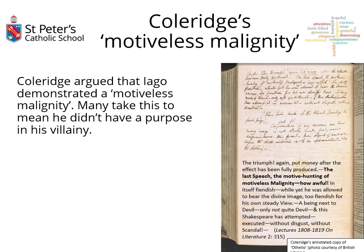The phrase 'motiveless malignity' was coined by Samuel Taylor Coleridge, a romantic poet who, in his own annotations of his text, argued that Iago demonstrated a motiveless malignity. A malignity is something evil — we talk about cancer being malign. So this idea of something that is just evil, eating away and corroding society, and for Coleridge it was considered motiveless: Iago was evil, bent on chaos and destruction, and would look around trying to find a justification for it.